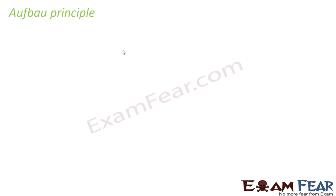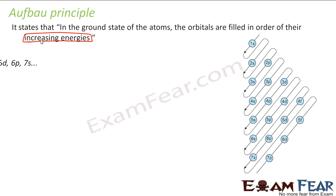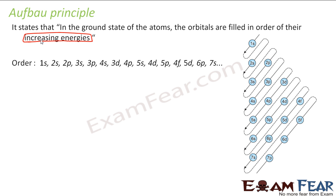Let's discuss the Aufbau principle first. This principle states that in the ground state of an atom, the orbitals are filled in order of increasing energies. They are filled in order of increasing energy. For any multi-electron atom, the order depends on the n plus l rule.